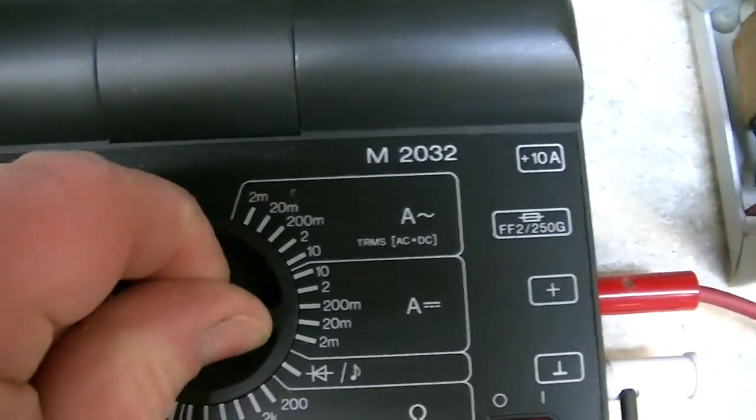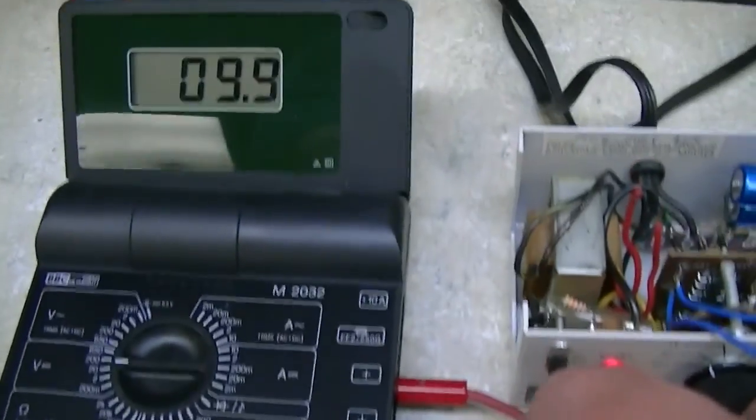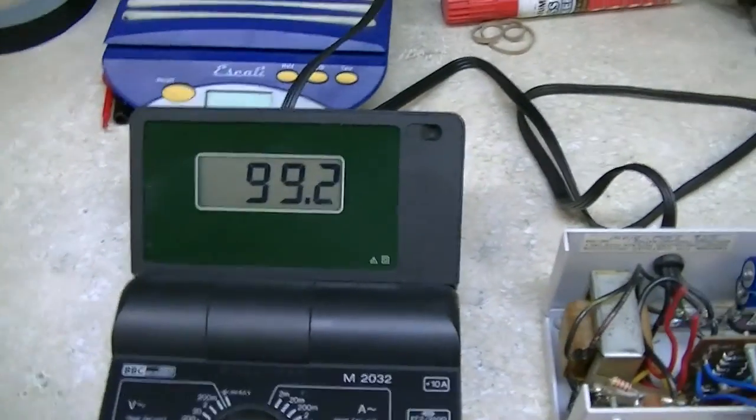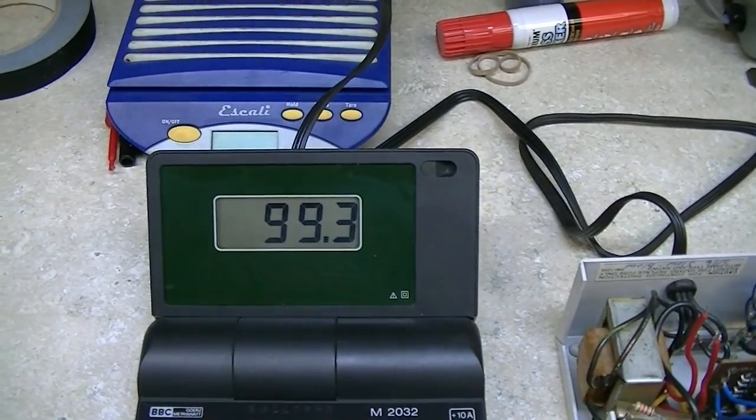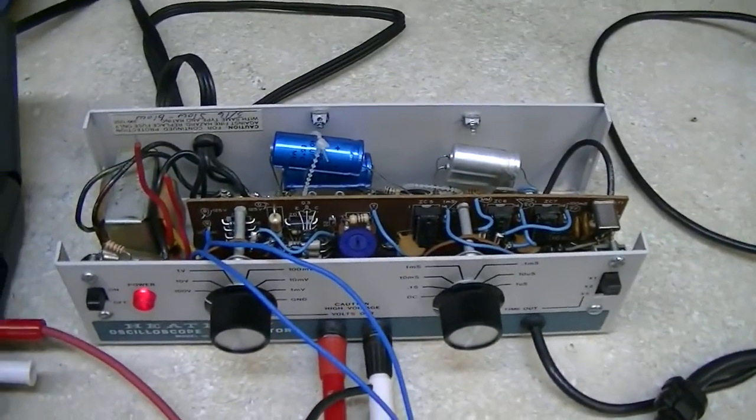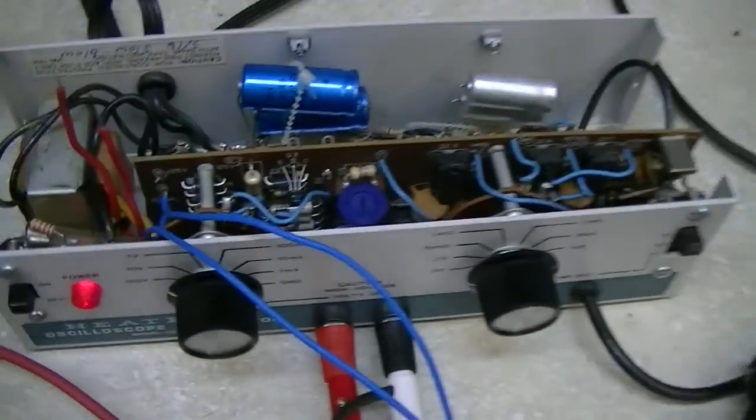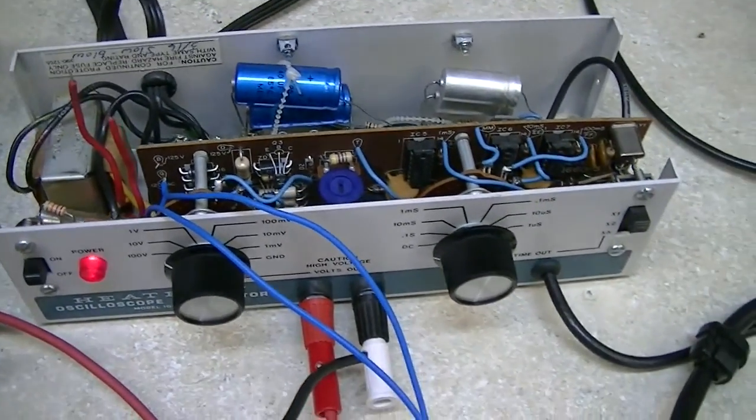And then from there I've got to go up to the 200 volt range on this. Now 100 volt, got 99.3. So at least as far as the DC output goes on this, now that I have regular 110 volts running through here and into that circuit, everything seems to be working normally.